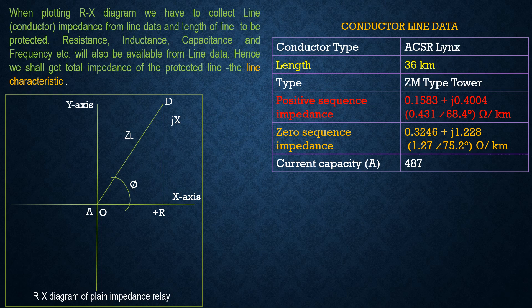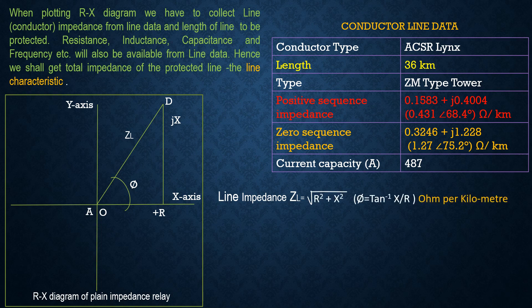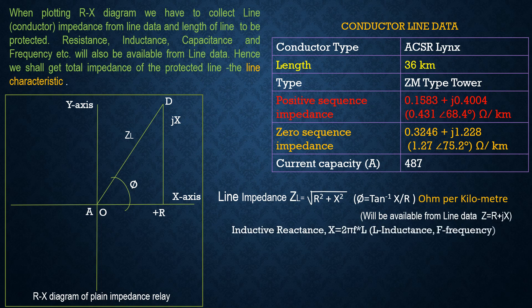The positive sequence impedance is 0.1583 + j0.4004, that is 0.431 Ω/km at an angle of 68.4 degrees. The resistance of the conductor is 0.1583 Ω/km, the reactance is 0.4004 Ω/km, and the calculated impedance is 0.431 Ω/km at an angle of 68.4 degrees. Impedance is calculated using the formula: ZL = √(R² + X²), and angle φ = tan⁻¹(X/R).